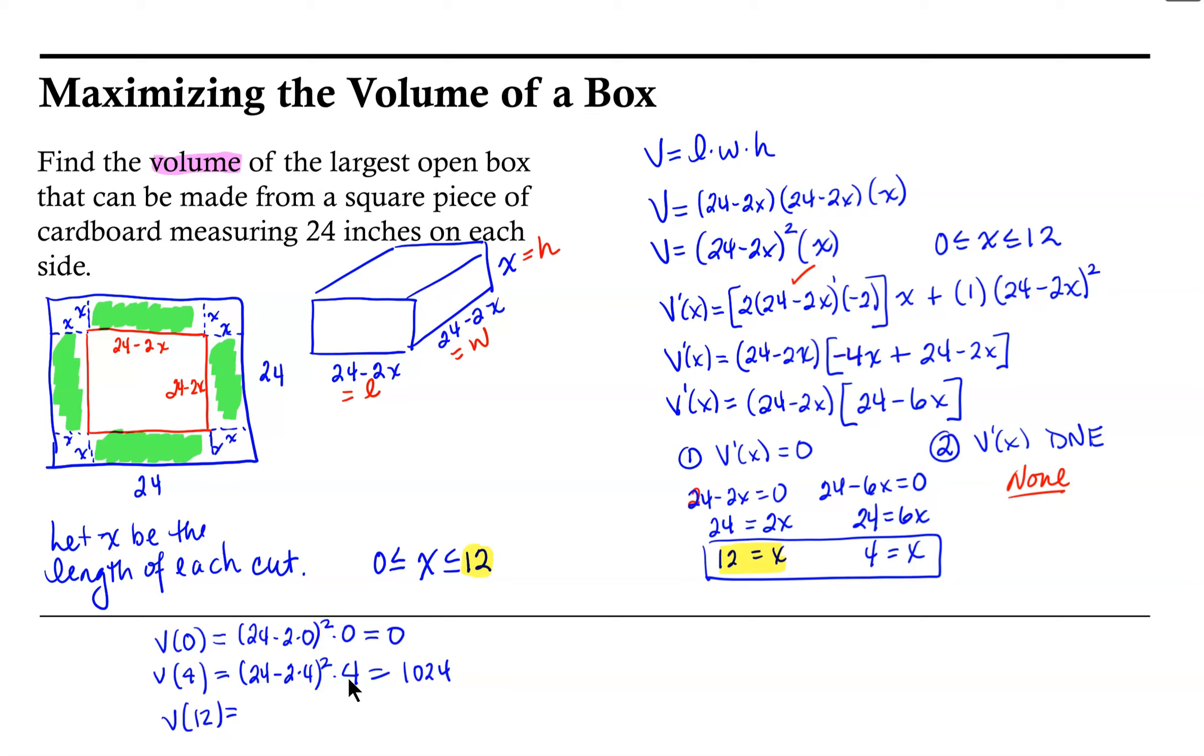And then lastly, volume at 12, we would have 24 minus 2 times 12 squared times 12. Well inside these parentheses, 2 times 12 is 24. We would have 24 minus 24, or 0 squared. And 0 times 12 would be 0.